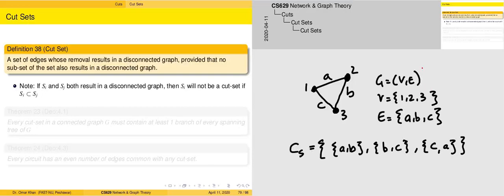Hello, today we are going to have a look at the concept of cut sets. A cut set is basically a subgraph of G and it comprises a set of edges. If these edges are to be removed from the graph, it will become disconnected.